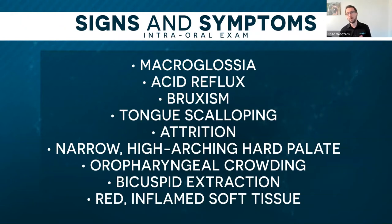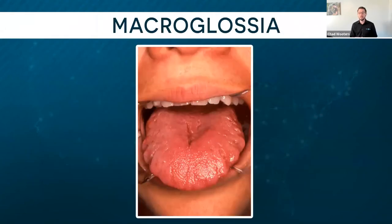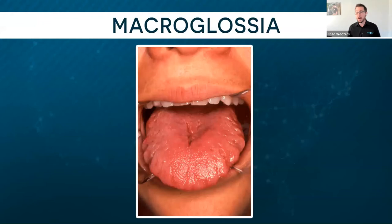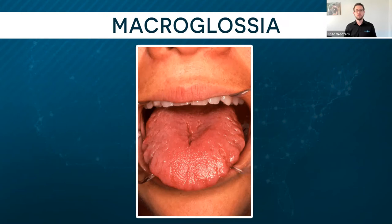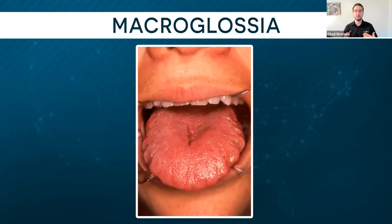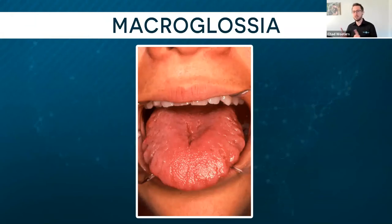Macroglossia — when you say that to a patient they're going to get lost on the clinical term. What it means is a large tongue. If the tongue is too large to fit in the mouth while we're awake with muscle tone, at night when that tongue expands it's going to likely fall back and collapse the airway. It's not objectively proving sleep apnea — we need a home sleep study for that — but it is a very common sign and can be indicative.